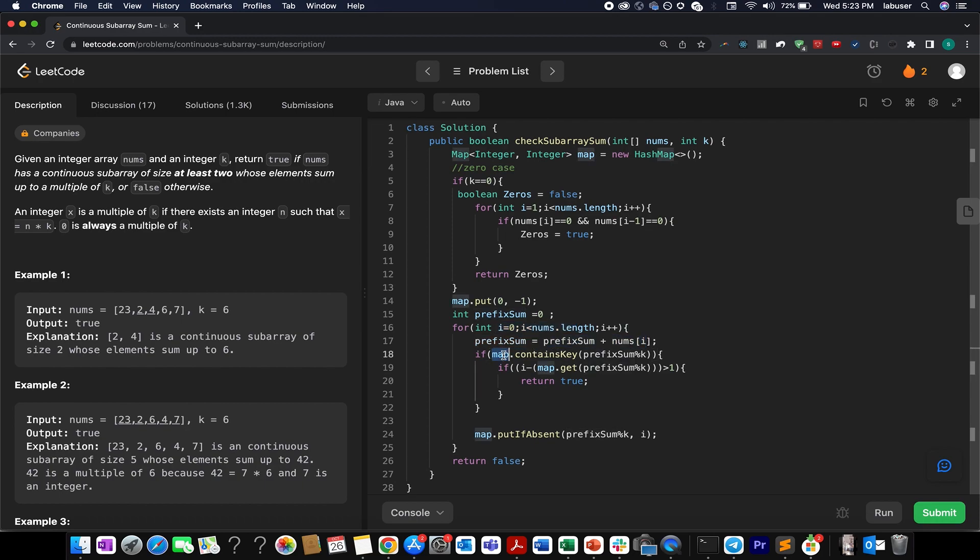I check whether my map already contains prefix sum modulus k or not. If it does contain what do I do? I compare at what index does it occur.